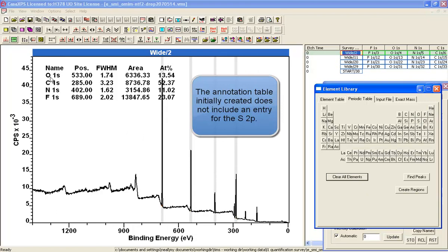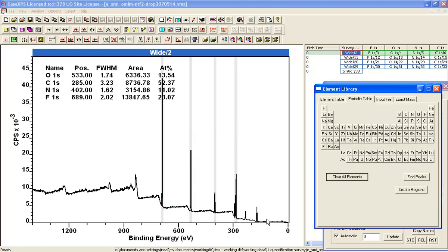Now, there were five peaks identified, five elements, Oxygen, Carbon, Nitrogen, Fluorine and there was Sulphur. But Sulphur has not had a region created.